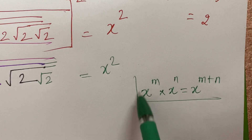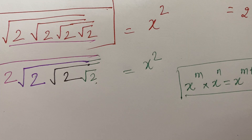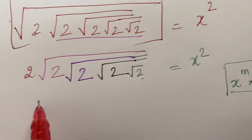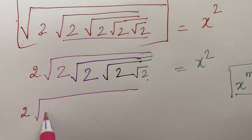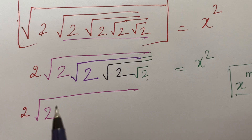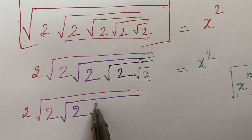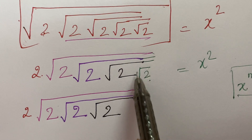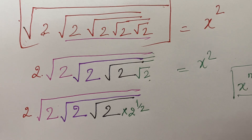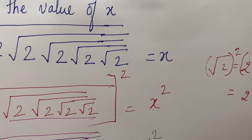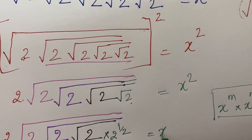This law of indices you will have to make use of now. So let us follow the color code strictly. 2 as it is, then you have square root of 2, multiplied by another square root of 2, and then multiplied by another square root of 2 — written as 2 raised to the power 1 upon 2. Square root of 2 means 2 raised to the power 1 upon 2. So this is equal to x square.